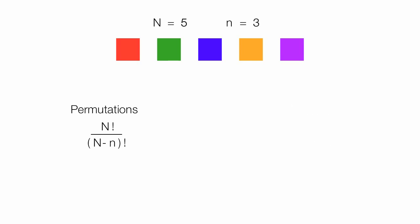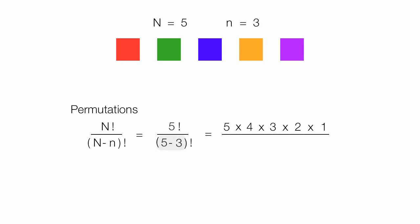I will calculate the number of permutations first. This is equal to five factorial divided by (five minus three) factorial. In the numerator I have five times four times three times two times one, which is five factorial. In the denominator I have five minus three, which is two, or two factorial — so two times one. Looking for things to cancel, I can cancel the two times one in the denominator and numerator, leaving me with five times four times three, which is 20 times three, equal to 60.